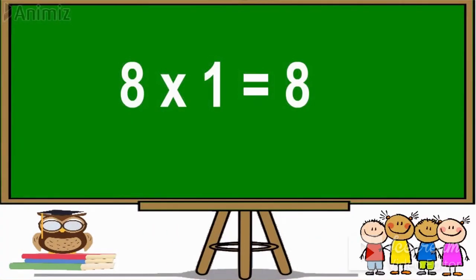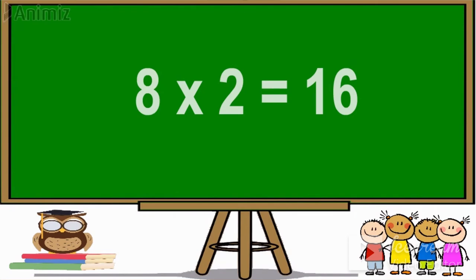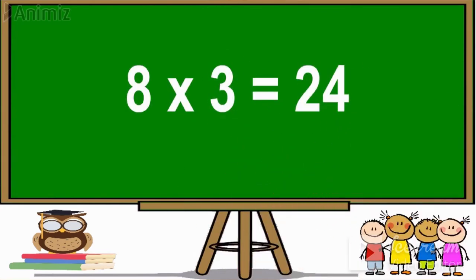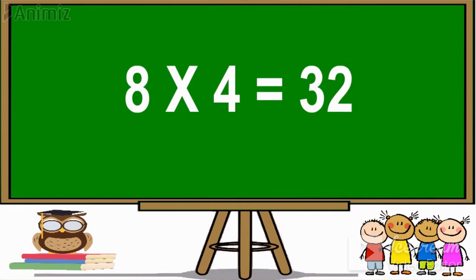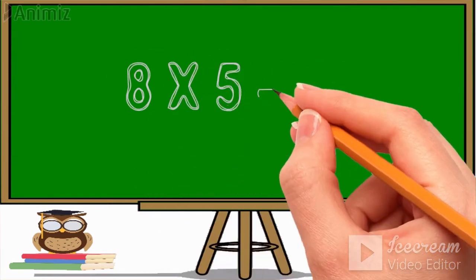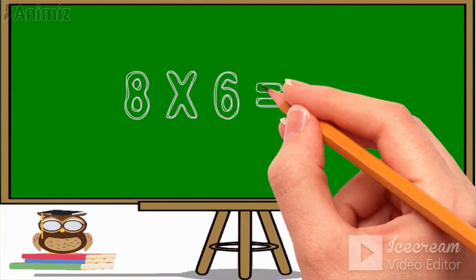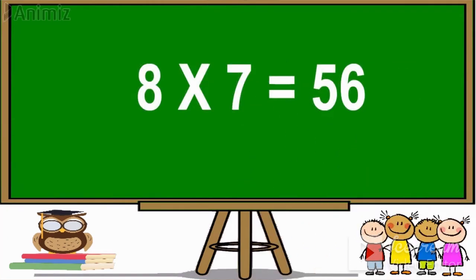Table of 8. 8 ones are 8. 8 twos are 16. 8 threes are 24. 8 fours are 32. 8 fives are 40. 8 sixes are 48. 8 sevens are 56.